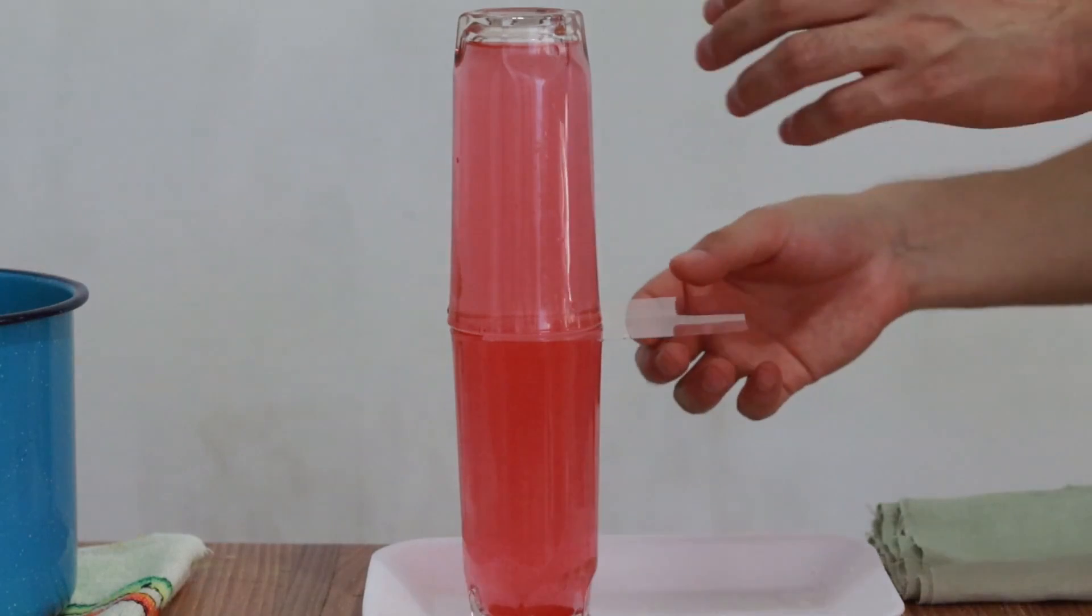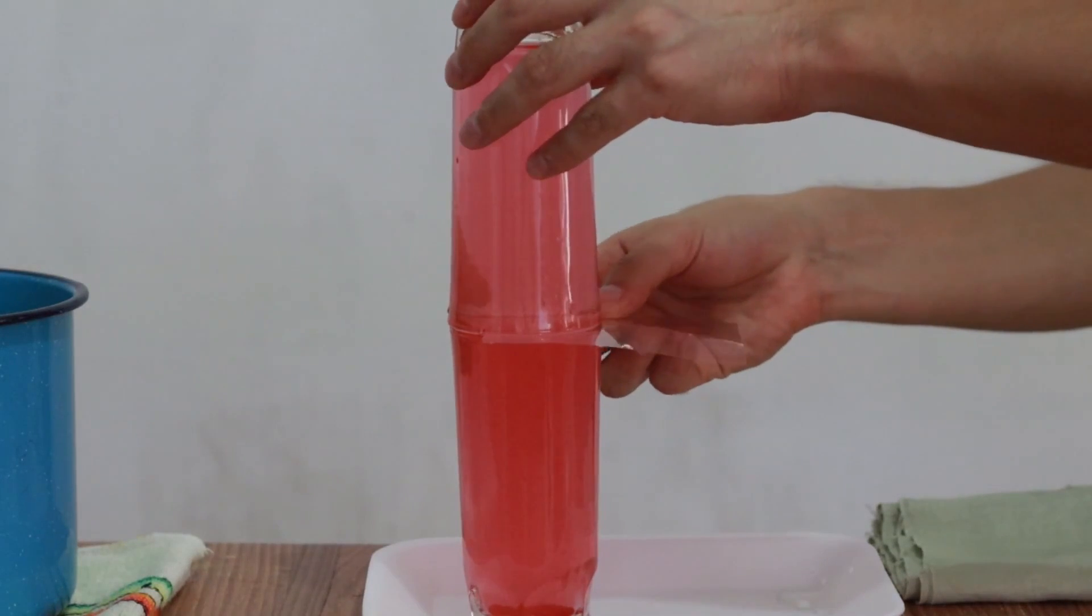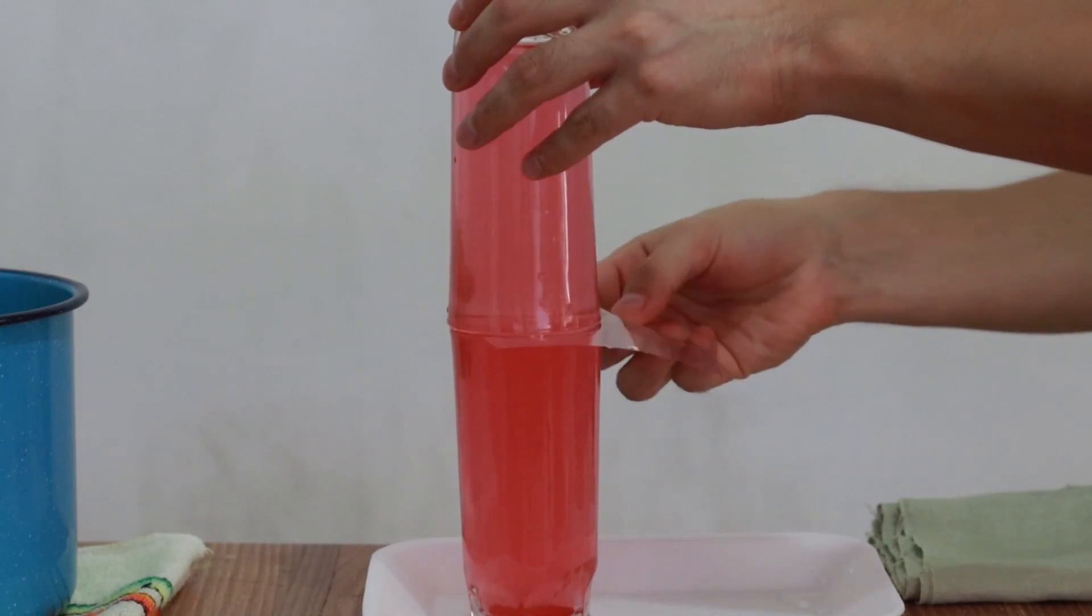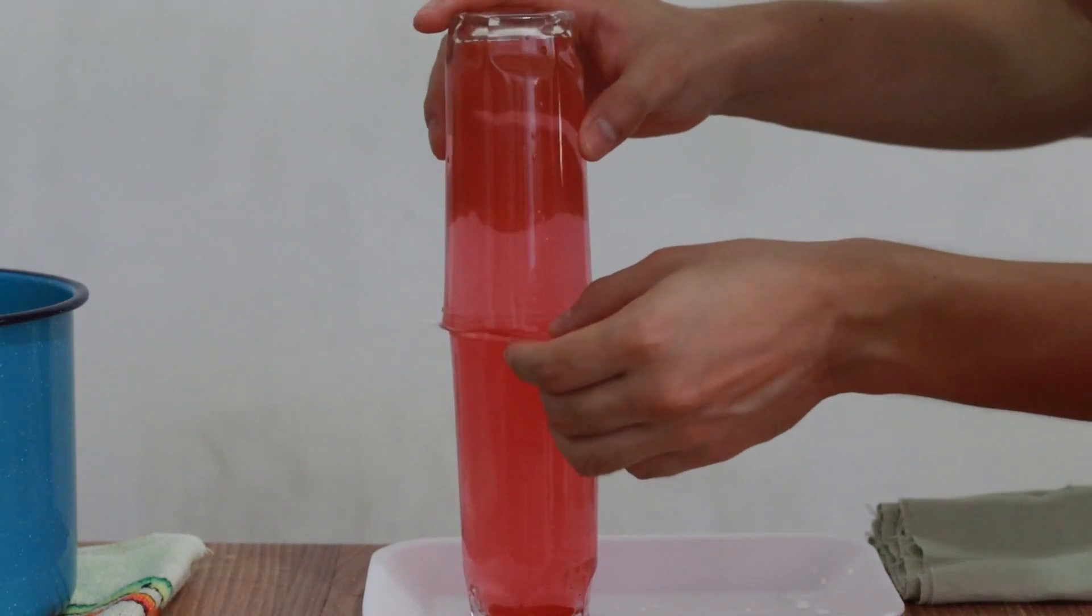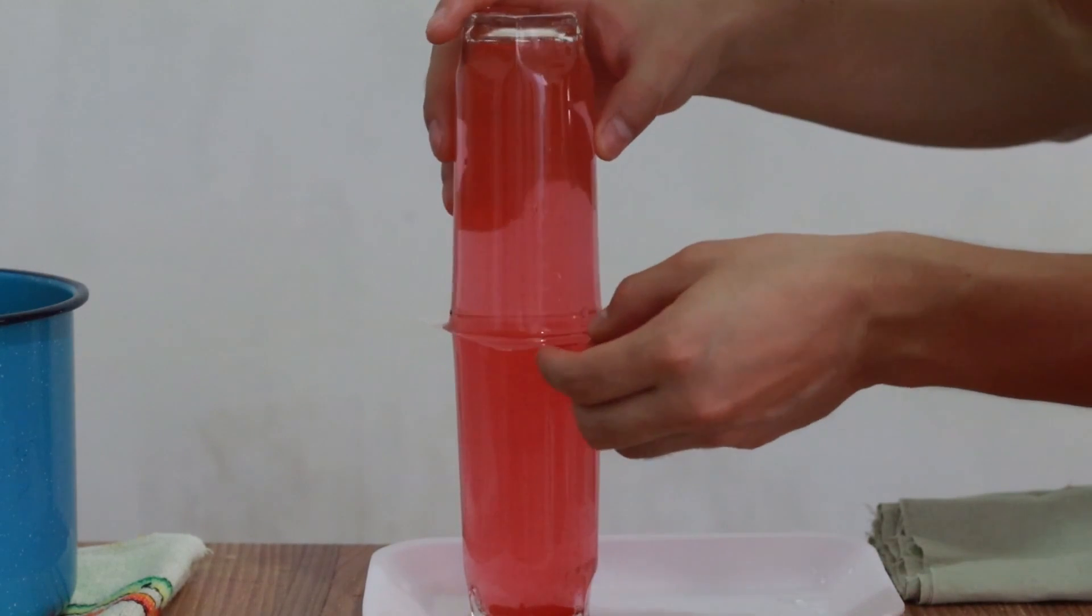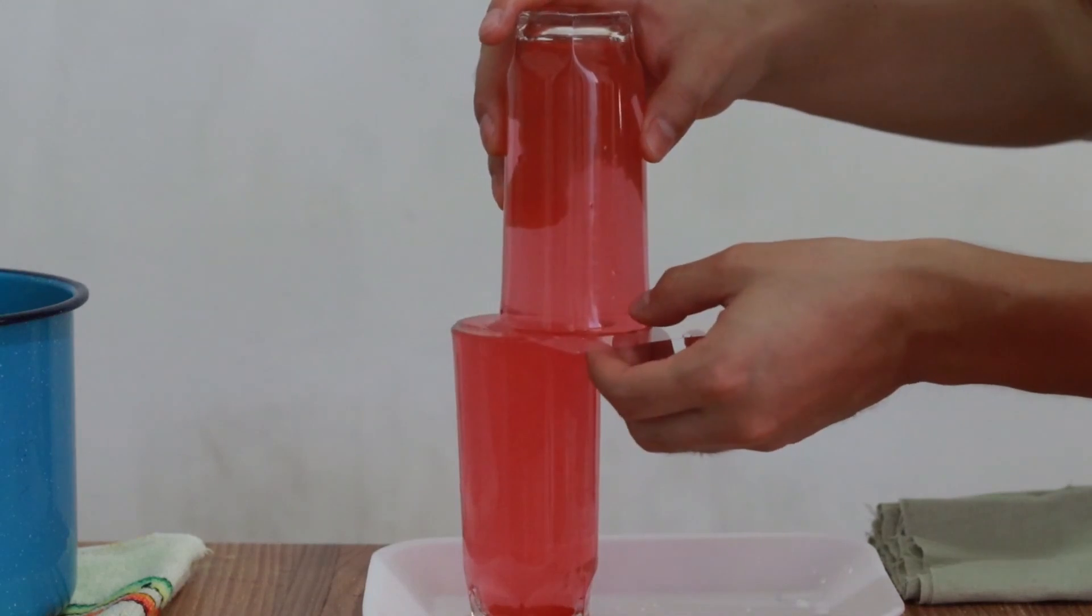To separate the glasses we put the plastic square back in its place and slide the glasses along with the plastic square so that the water does not spill.